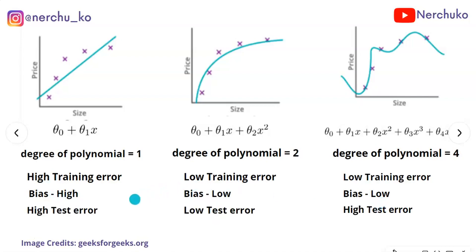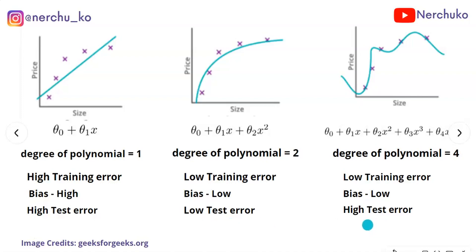In the first image, we have high training error and high bias. When we introduce new data, our model predicts and we get high test errors as well — both train and test error are high. In the third image, training error is low (low bias), but test error is high — this is variance.